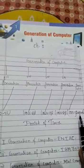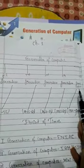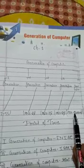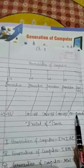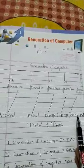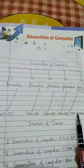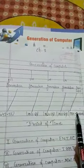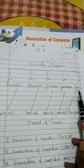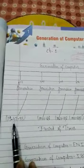The last one is the 5th generation computer, from 1989 to the present. We are all currently using the 5th generation of computers. So if anyone asks you which generation of computers we are using, we can say the 5th generation.